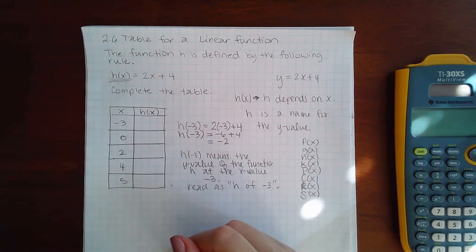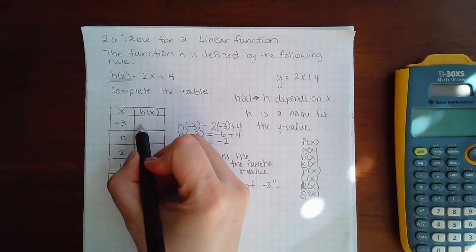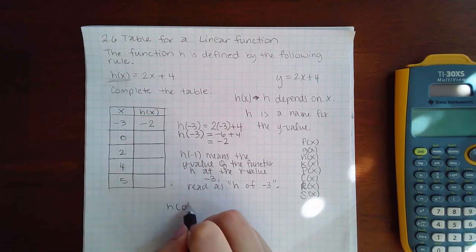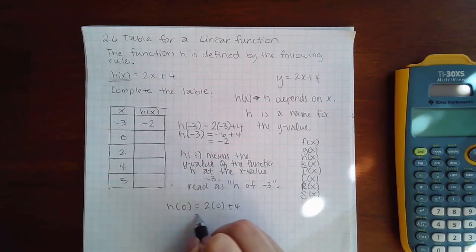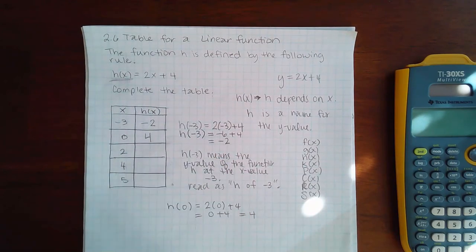So, especially when you get to the next module. We've already figured this y value out is negative 2. Now, let's find h of 0. It means plug in 0. So we get 0 plus 4, which is just 4. So now I can fill in that box.